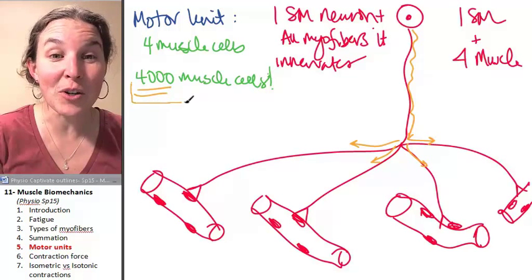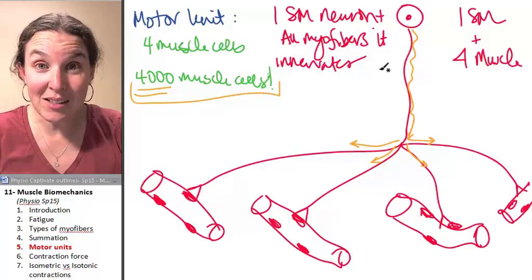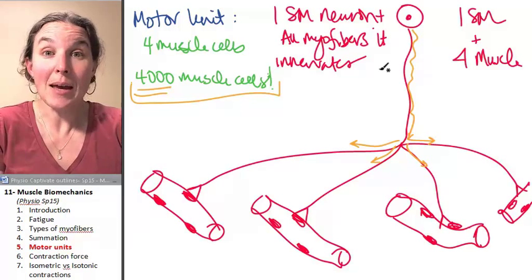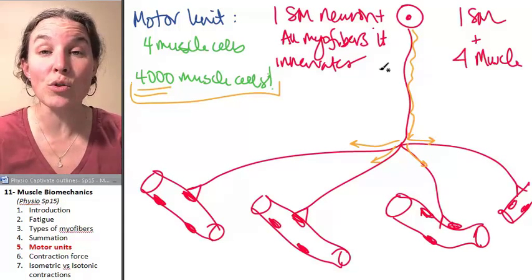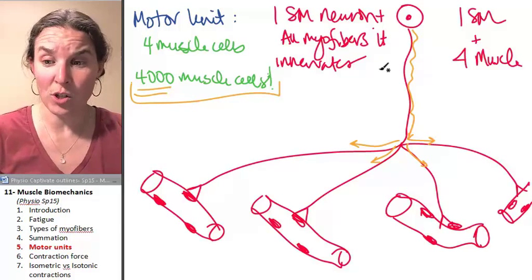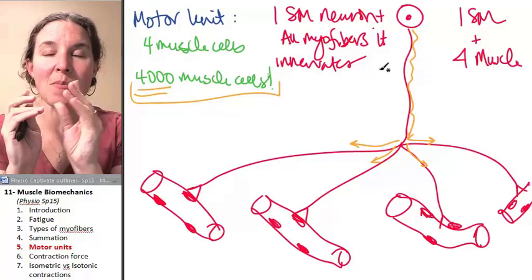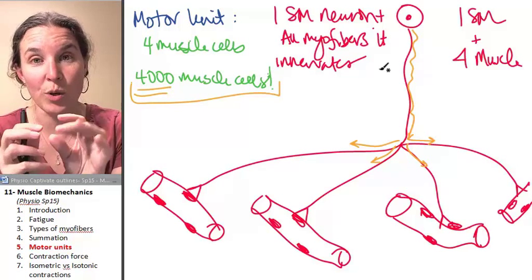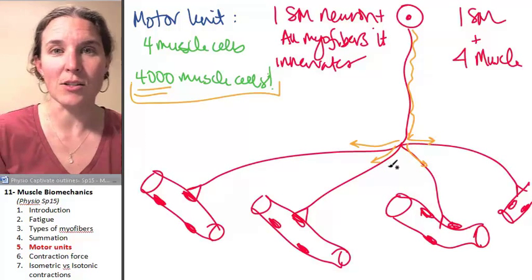The size of the motor units in big muscles, like gastrocnemius, quadriceps group, hamstring group, these guys have very, very huge motor units because you really don't need to have a huge amount of control with those muscles. Because fingers have much smaller motor units because you do a lot more fine motor action with your fingers than you do with your quadriceps or your gastrocnemius.